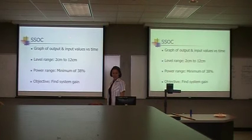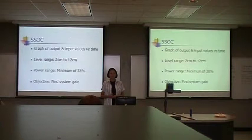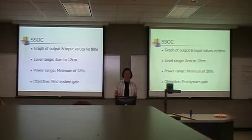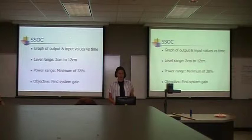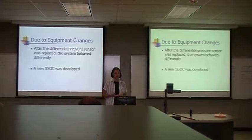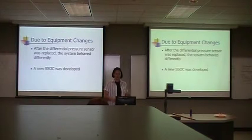This is our SSOC — input output versus time. Our level range is 2 to 12 centimeters, and we found out that we have a minimum power of 38% before the system will start moving water. We found this out about four weeks ago, so that's a good thing to know when you're doing controller experiments. The objective was to find the system gain, and due to equipment changes — after I replaced the differential pressure sensor — the system behaved differently, so I went back and made a new SSOC. Here's the new behavior.